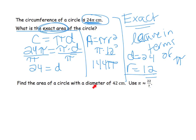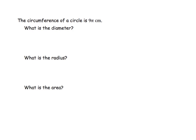Here it says find the area of a circle with a diameter of 42 — you'd do the same thing, except instead of leaving it in terms of pi, you'd use 22 sevenths. I'm going to let you do that one on your own so this video doesn't get too long. Okay, here's another one: the circumference is 9 pi. Using what we just did, see if you can do the same three steps — figure out the diameter by working backwards, figure out the radius by dividing by 2, and figure out the area. Pause and try to do this on your own, then come back.